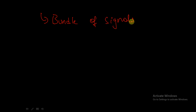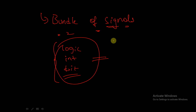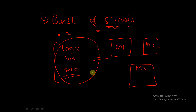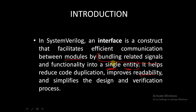Basically, an interface is a bundle of signals. For example, if we have some set of signals — say 10 signals — of logic, integer, or some other data type, and we want to use the same signals in different modules like module one, module two, and module three, instead of writing all the signals every time in each module, we can simply use this interface construct and encapsulate all the signals and use the interface in those three modules.